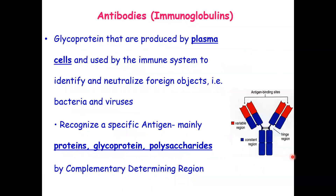What is the antibody? I think we all know the structure of the antibody, but let's review it. The antibody is a glycoprotein produced by plasma cells and used by the immune system to identify and neutralize foreign objects such as bacteria, viruses, and toxins. It is used in the immune response.